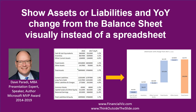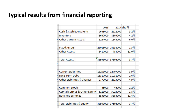Would you want to present assets or liabilities and their year-over-year change from the balance sheet? Don't use a spreadsheet — do it visually instead. Here's what we typically see when we do financial reporting: all our asset and liability categories, the amounts from this year, previous year, and their change. Spreadsheets overwhelm audiences, especially executives and boards of directors.